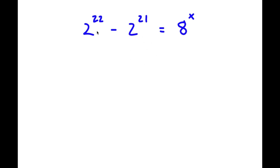In this problem, I have 2 to the power of 22 minus 2 to the power of 21 is equal to 8 to the power of x. At first glance, this problem looks pretty complicated. However, it's actually easier than you might think. I'm solving for the value of x.